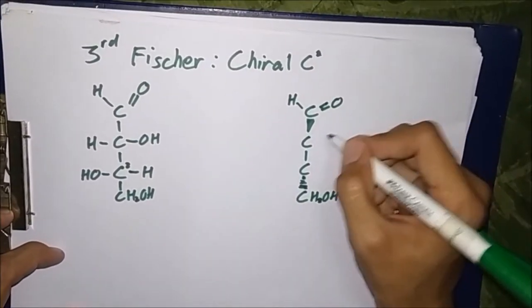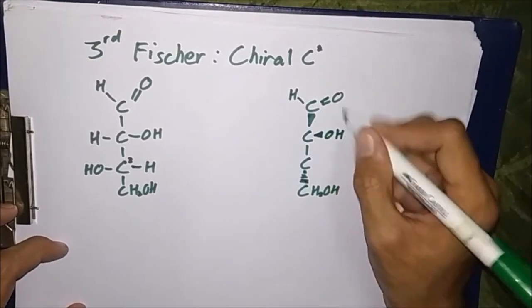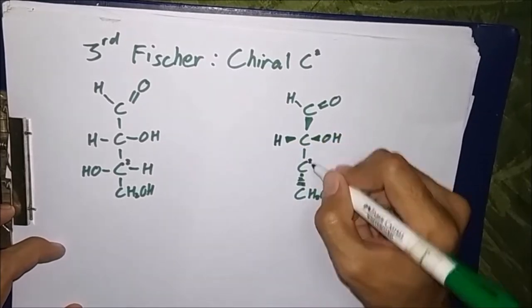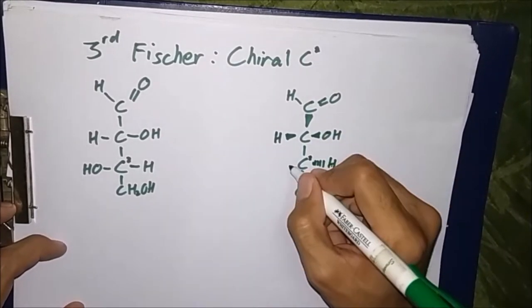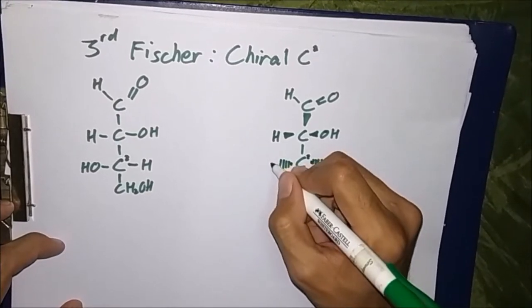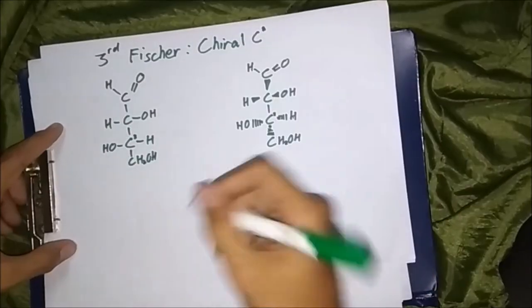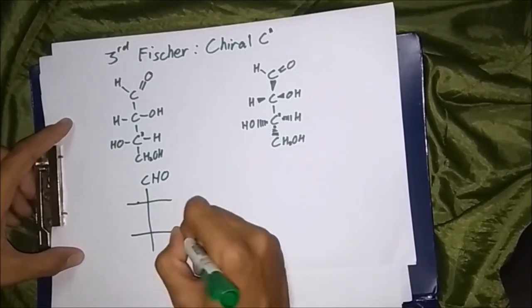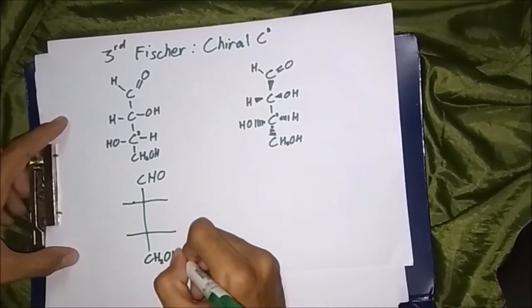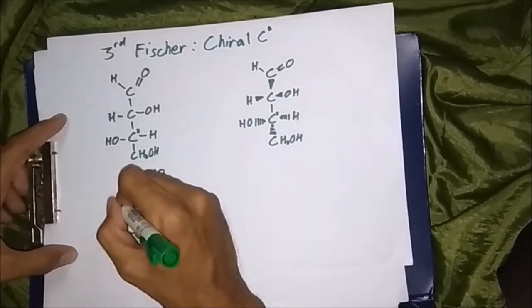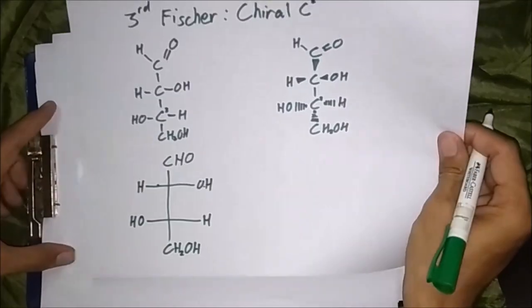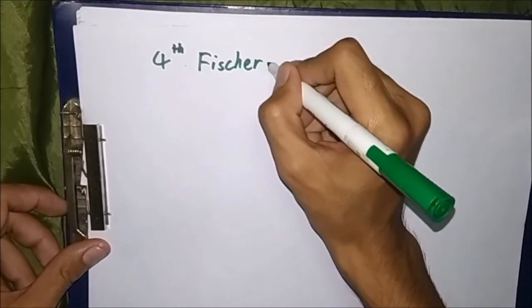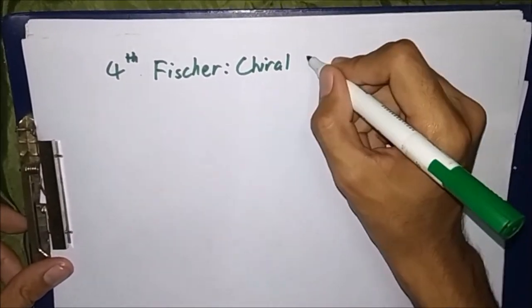Due to this kind of bonds, our Fischer projections cannot be rotated by 90 degrees or 270 degrees in the plane of the page, since the orientation of bonds relative to one another can change, thus causing problems. However, any rotation of 180 degrees doesn't change the molecule's representation, as you can see in the second and third Fischer projections.